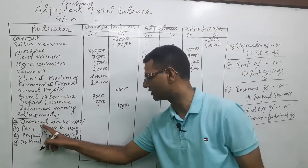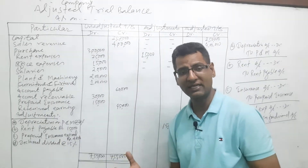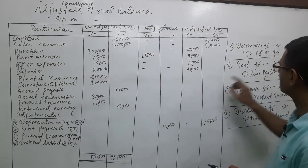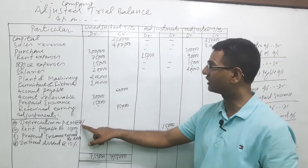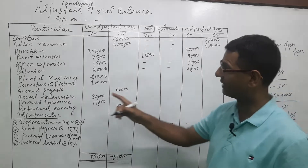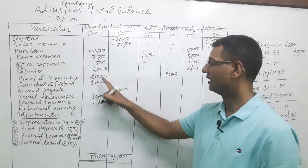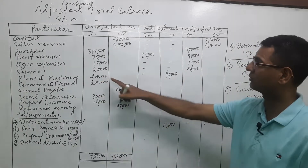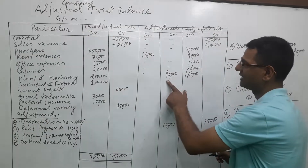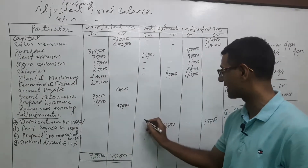For plant and machinery, we have given depreciation on plant and machinery. Assets such as furniture, fixtures, land, building, plant, and machinery — when any asset depreciates, the entry is: depreciation account debit to that asset credit. Here, plant and machinery depreciates at 20% on 2 lakh, so 20% of 2,00,000 = 40,000. Depreciation of 40,000 is debited; plant and machinery is credited — so 2,00,000 minus 40,000 = 1,60,000 is the book value. Depreciation charged is 40,000 on the debit side.